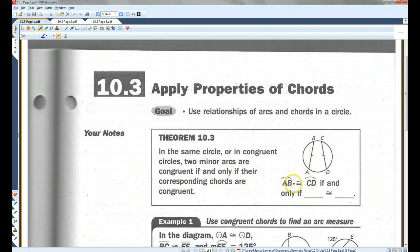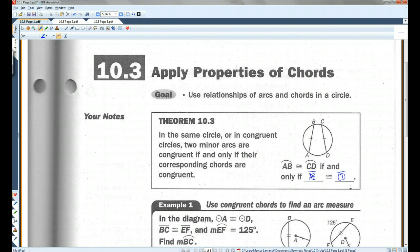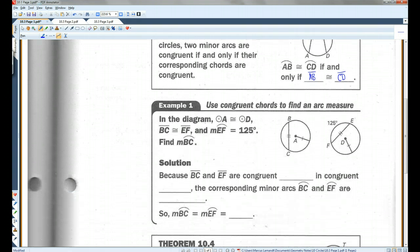So, arc AB is congruent to arc CD if and only if the chord AB is congruent to the chord CD.